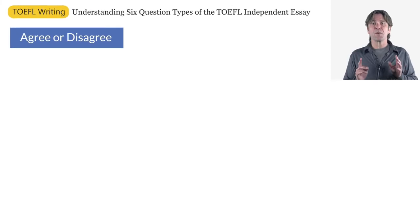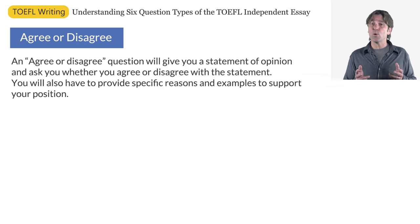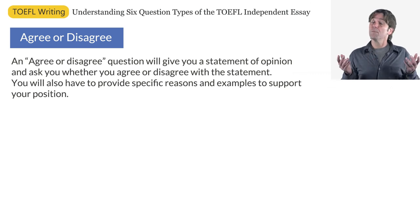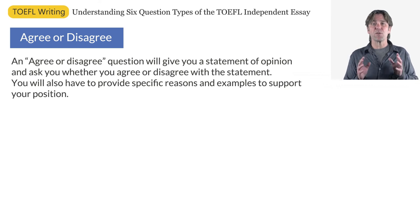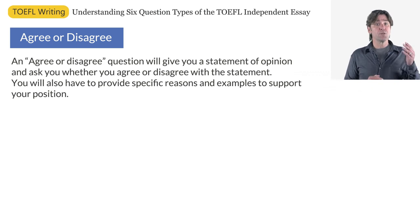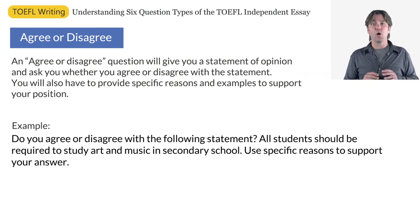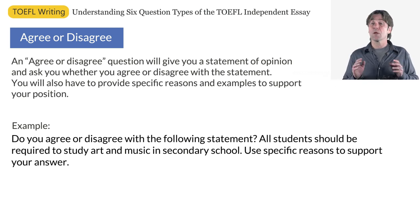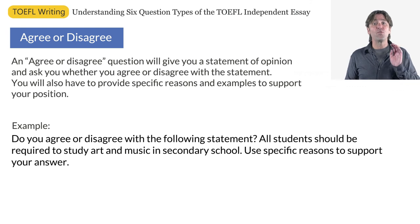The first independent question type on our list is agree or disagree. An agree or disagree question will give you a statement of opinion and ask you whether you agree or disagree with that statement. You will also have to provide specific reasons and examples to support your position. Here is an example: Do you agree or disagree with the following statement? All students should be required to study art and music in secondary school. Use specific reasons to support your answer. For this type of question, your essay structure should have four or five paragraphs.